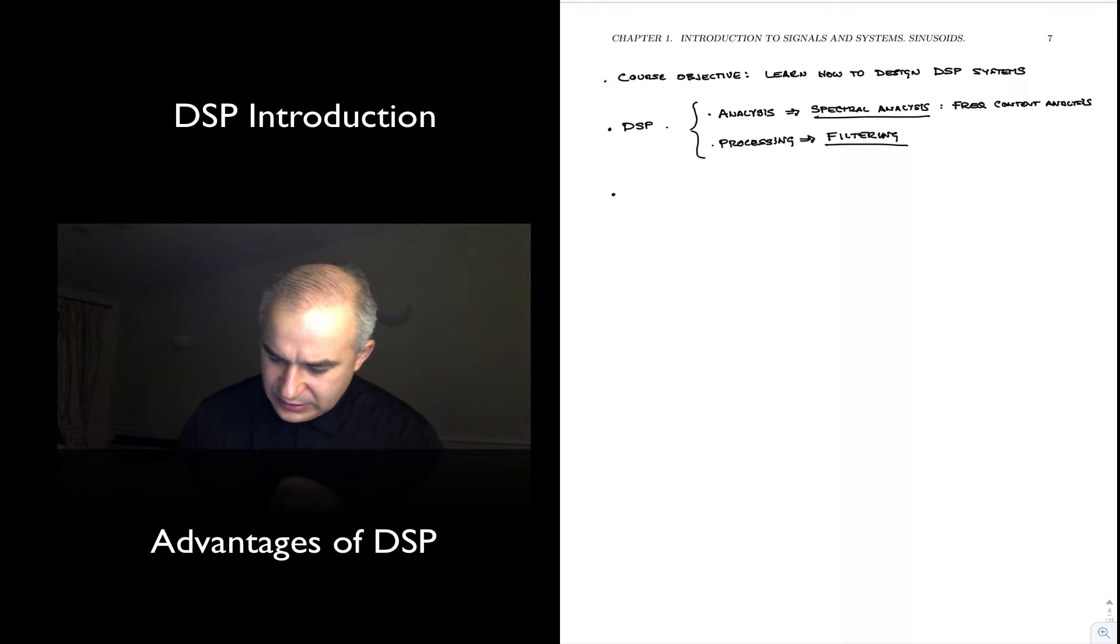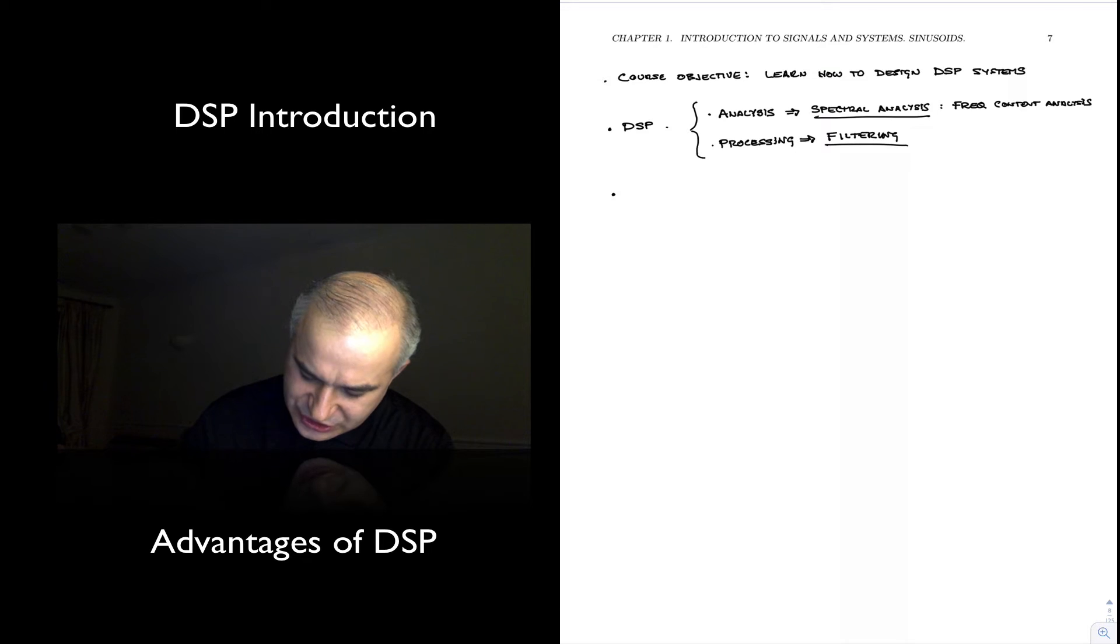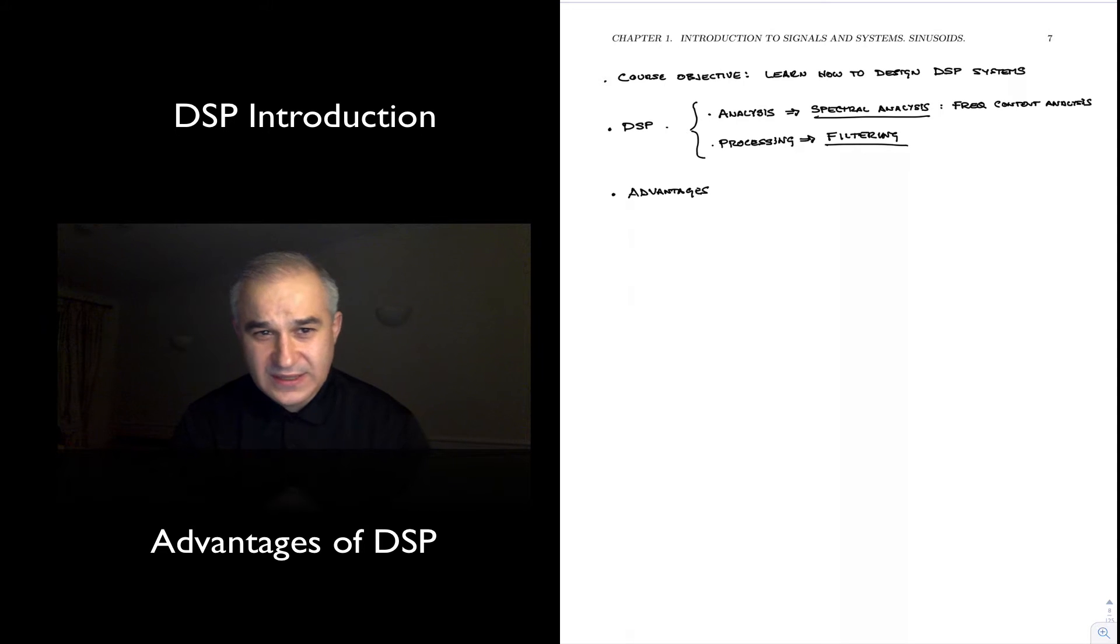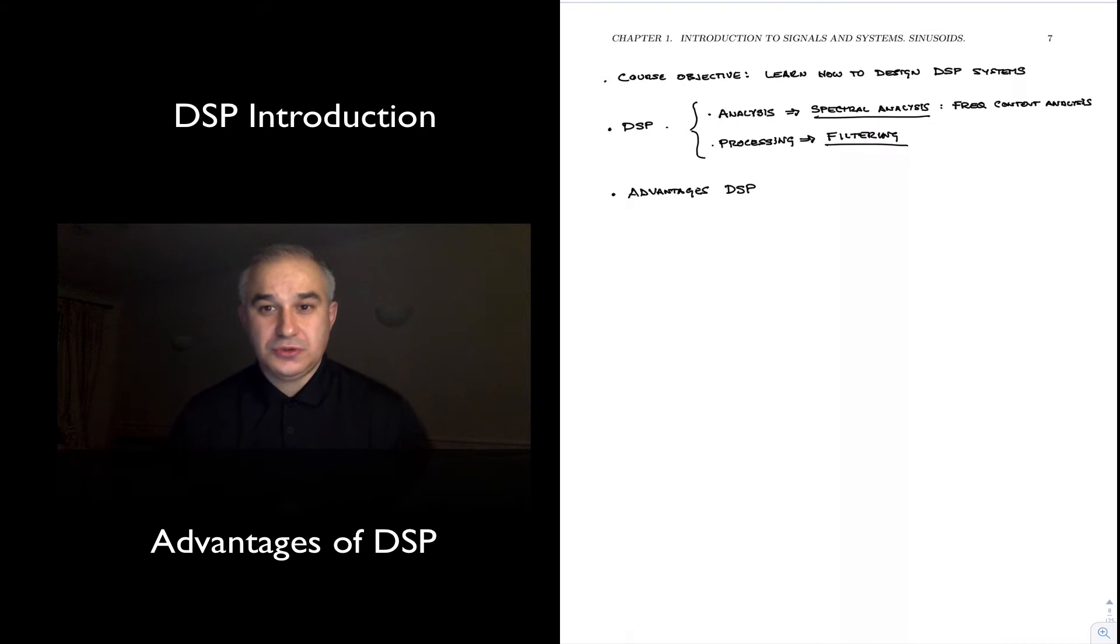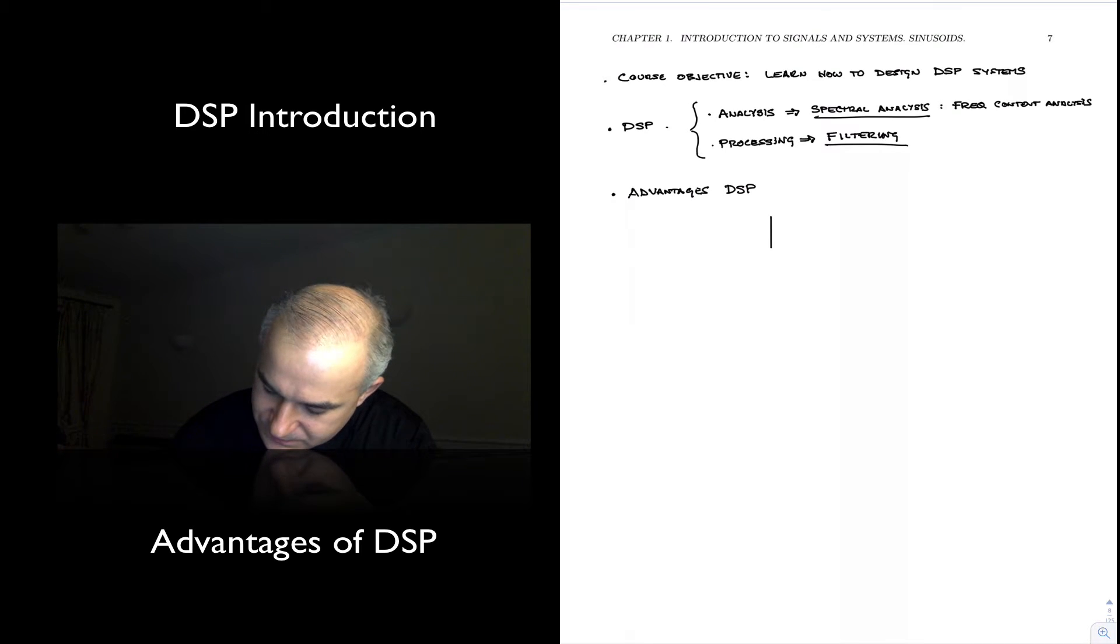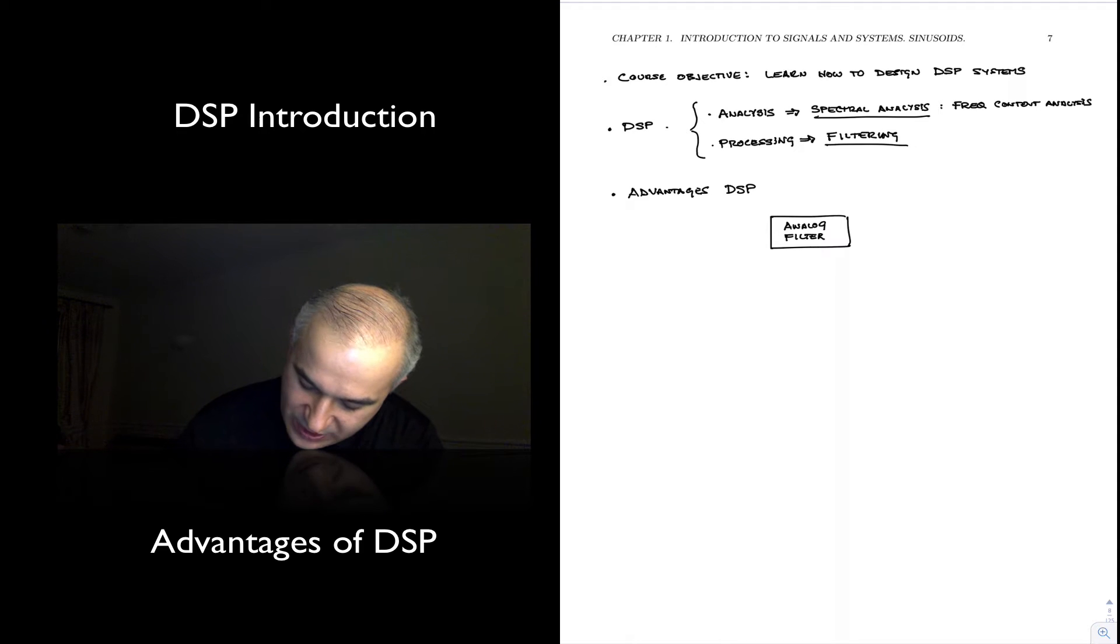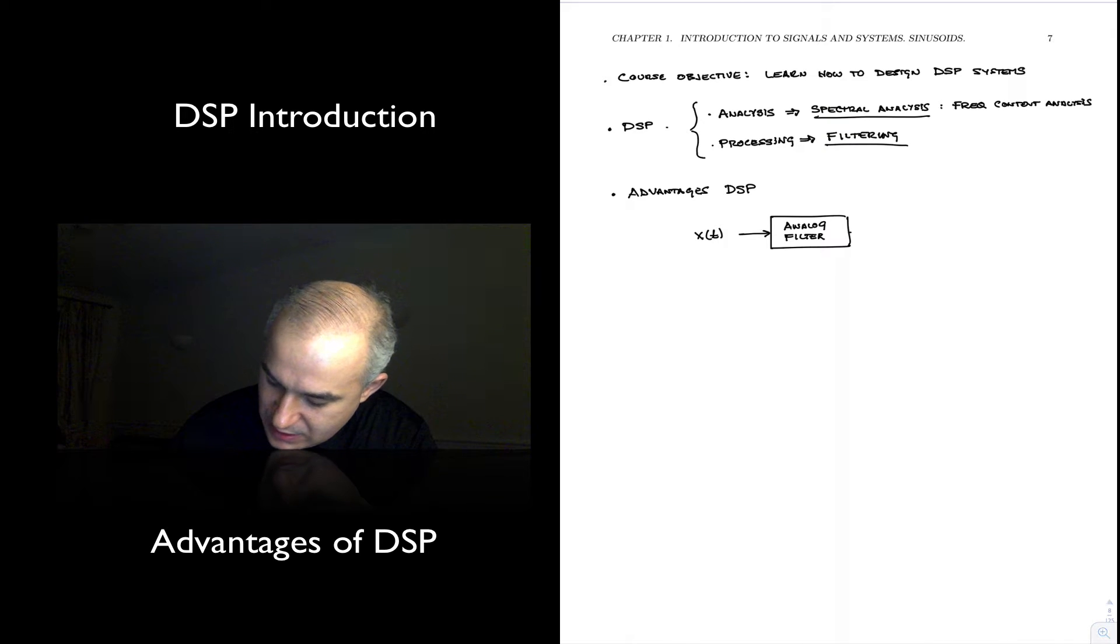Now, we should start thinking about what are the main advantages of doing this using DSP, digital signal processing, as opposed to just analog filters and analog processing. So if we are thinking about the analog system, let's take a filter for instance, an analog filter or system. We have an analog continuous time signal going in, and it is transformed into another signal at the output.